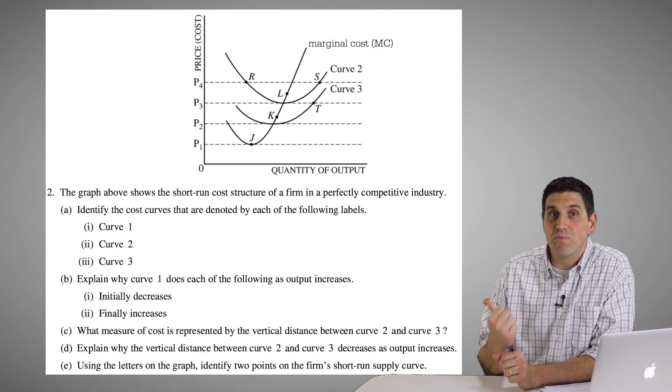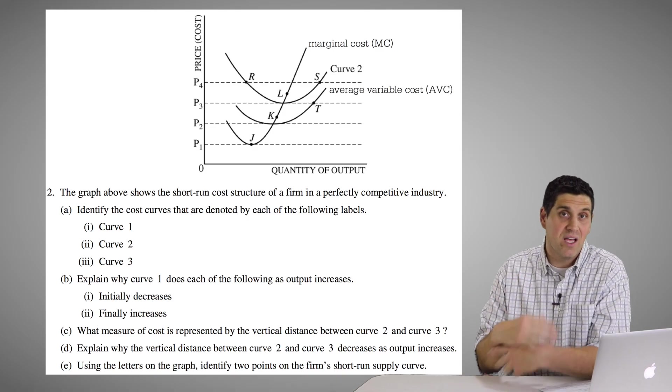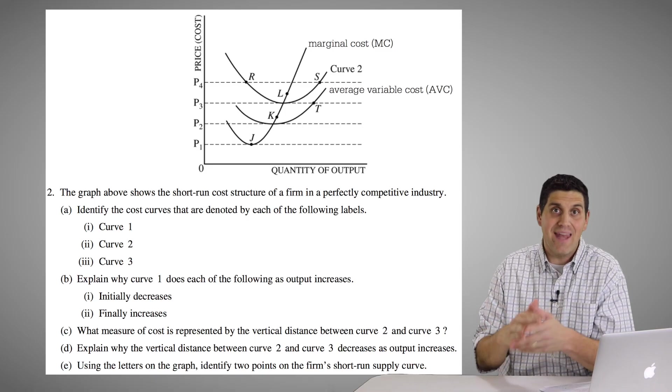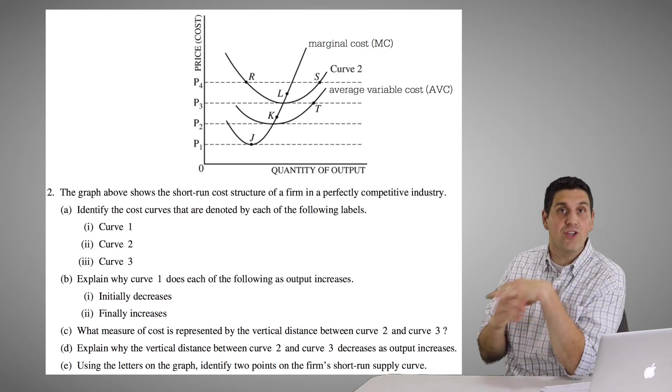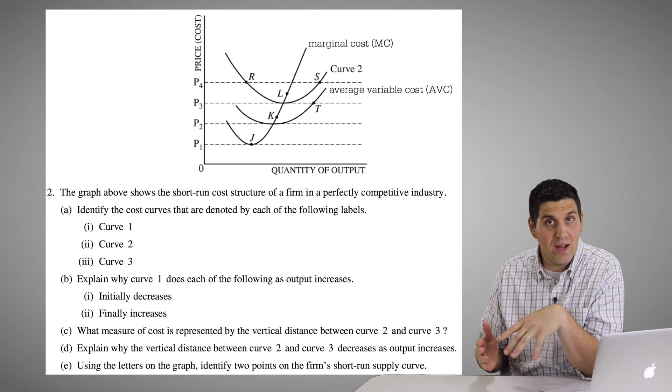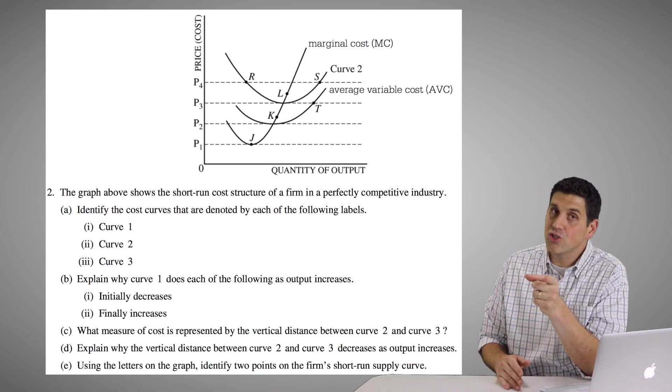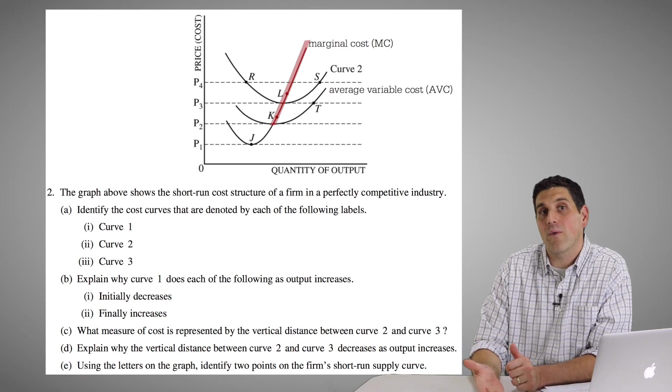If the price ever falls below P2, the price falls below the average variable cost, this firm shouldn't produce any at all. They shouldn't produce any. So if the price is at P2, they should produce it. If the price fell down to P1, they should produce nothing. They should produce nothing at all.